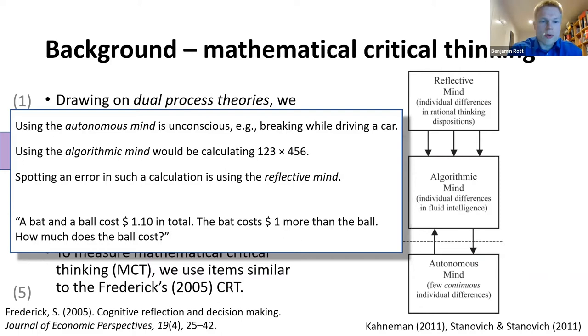But actually this result is wrong. The ball costs only five cents. So when the bat costs one dollar more, it costs one oh five, and in total they cost one ten. And you only see this when you use your reflective mind, and this is where critical thinking is located in this model.